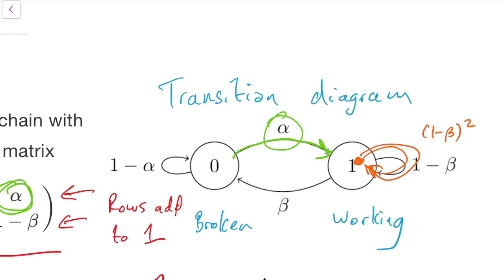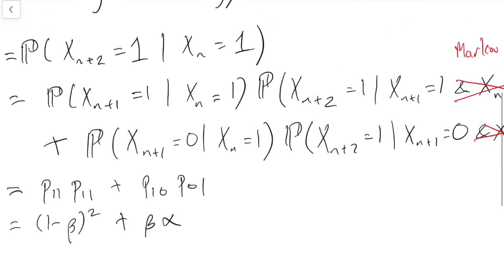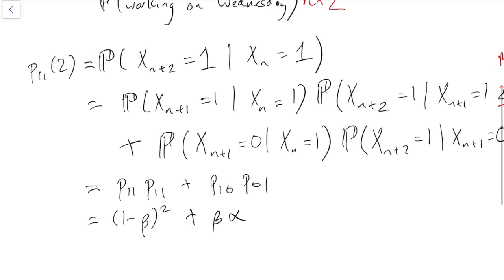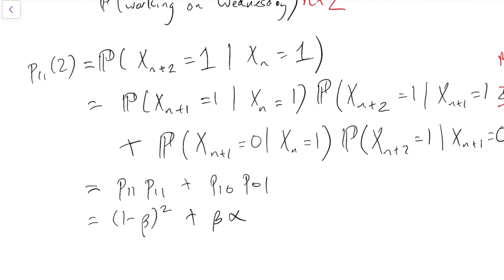The other way we could get it from 1 to 1 in two steps is that we could go to 0 and then come back. That would also get us 1 to 1. And so that would be beta on the way there and alpha on the way back or alpha beta. So we've got two ways of doing it, the alpha beta way or the (1 minus beta) squared way. And if we scroll back down and look at our answer, that's what we've got. So you could think of that as we're summing up the two paths of length 2 from 1 to 1.